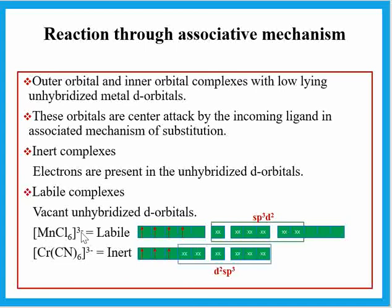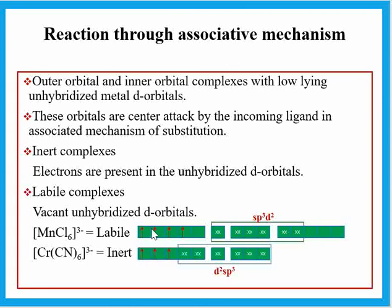For example, MnCl6 3- is an outer orbital complex where the unhybridized d-orbitals are empty — the incoming ligand can easily donate its electron pair to form the 7-coordinate pentagonal bipyramidal intermediate, making it labile. For CrCN6 3-, the inner unhybridized orbital has one electron filled, so there is no empty orbital available — making it an inert complex. Thus, lability depends on the electronic configuration of the particular complex.